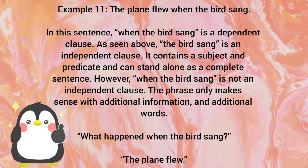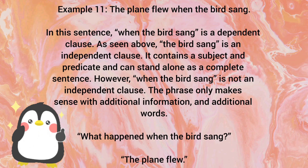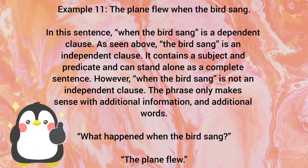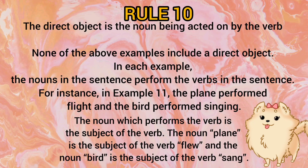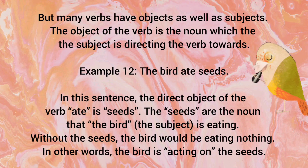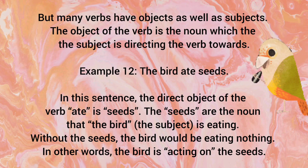For example, 'The plane flew when the bird sang.' Here, 'when the bird sang' is a dependent clause — it requires the additional context of the main clause to make sense. By contrast, 'The bird sang' is an independent clause; it contains a subject and predicate and can stand alone. Rule number 10: The direct object is the noun being acted on by the verb. For example, in 'The bird ate seeds,' 'bird' is the noun, 'ate' is the verb, and 'seeds' is the direct object — the subject is directly acting upon it.